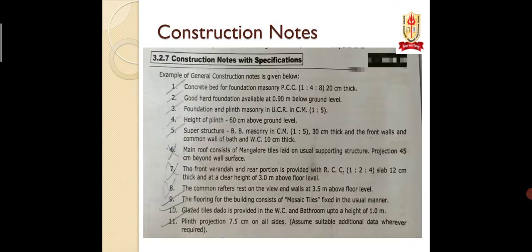The schedule of opening can carry five marks. The next part is construction notes — whatever cannot be shown in the drawing must be written here. For example, the concrete bed for the foundation is PCC. At the very start, PCC is placed as the foundation bed in a proportion of 1:4:8 and 20 cm thick. Starting from the ground, hard foundation is available at 0.90 m below ground level.